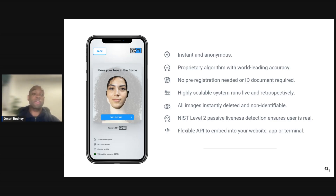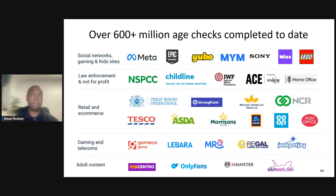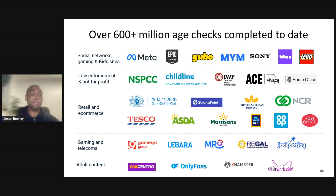This can all be integrated through a flexible API, bringing the security and power of anonymous age estimation into any website, app, or physical sales terminal. We have performed over 600 million age checks across the world, across a range of sectors — including the adult industry, retail, gaming, telecoms, some of the largest social networks, and dating.